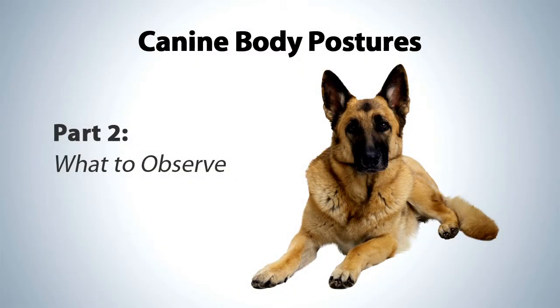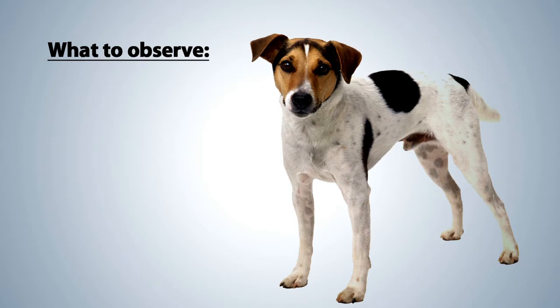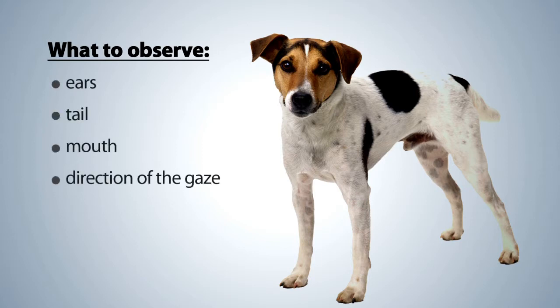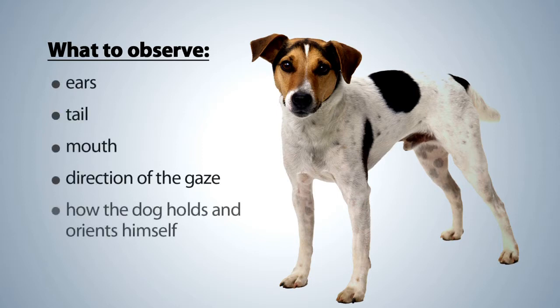What to observe. To correctly read the body language of dogs you must first observe a variety of body features including the ears, tail, mouth, the direction of the dog's gaze, how the dog holds and orients himself, and what kinds of vocalizations the dog is making. All of these features are important because there is no one feature you can rely on to predict the dog's behavior.